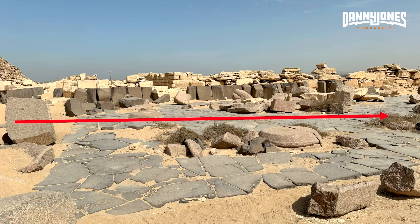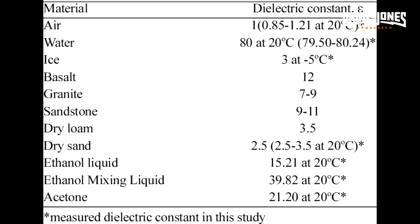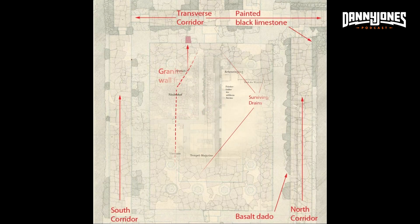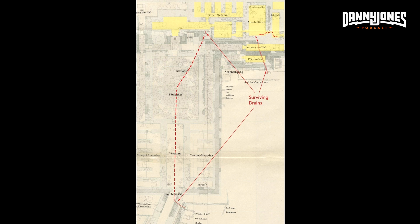This is just showing dielectric constants, which is a way to gauge the capacity of a material to store electric fields. All of these materials are dielectric materials with the capacity for storing electric fields. This is basically the configuration of the Pyramid of Nyusere at Abu Sir, and you can see in red the path of this conduit system.